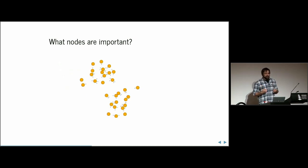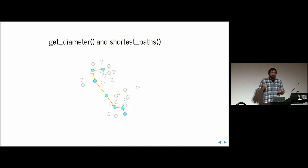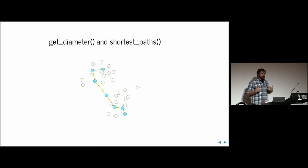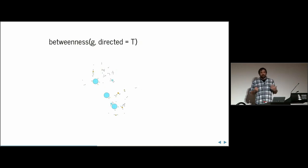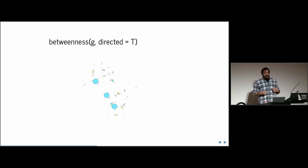Now we move on to centrality measurements. To measure the impact of a node, it's important to understand what a shortest path is. From node A to node B, the shortest path is the combination of nodes and edges to get from A to B. If we calculate the shortest path of all nodes with every other node, we can start counting the betweenness measurement of each node — certain nodes appear in those shortest paths very often, giving them a high betweenness centrality score.